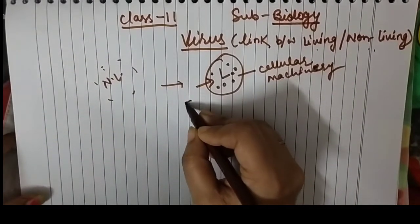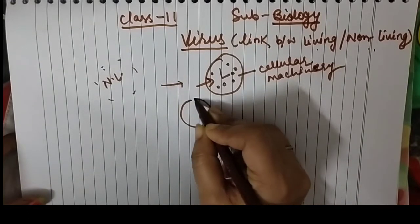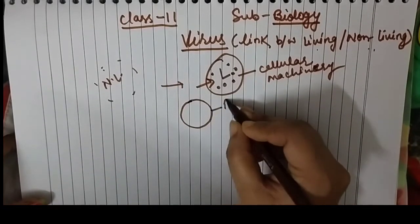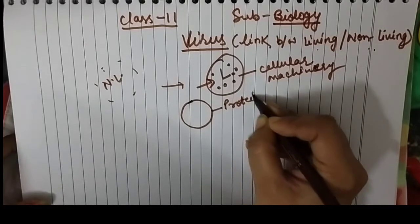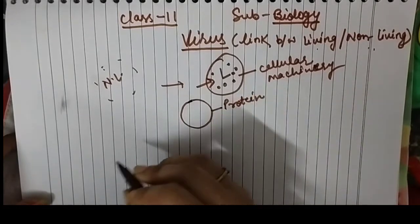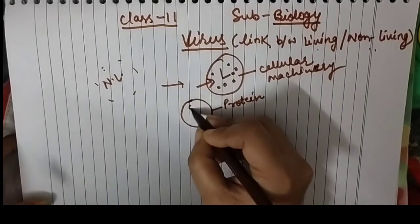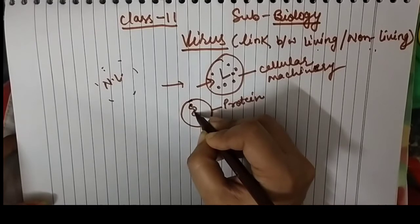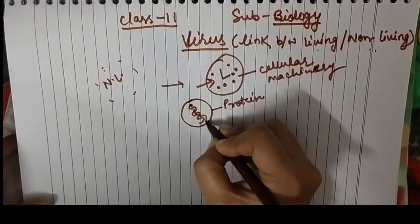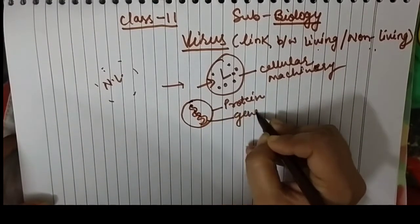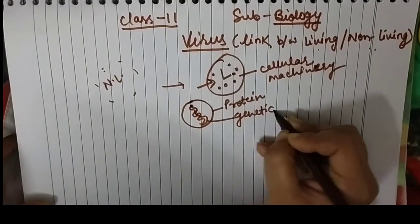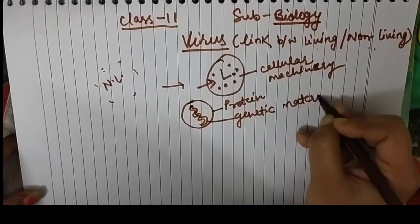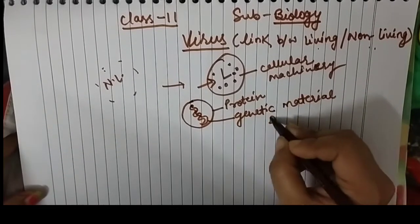They have a protective covering which is made up of protein, and inside it has a genetic material. This genetic material may be DNA or it may be RNA, but not both at the same time.